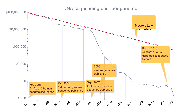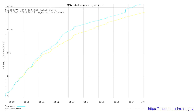This is a classic diagram in genomics. In red you have Moore's Law for computers, which basically says that the number of transistors doubles every couple of years. In blue you have the equivalent for DNA sequencing. And you can see that it's no longer linear, but rather almost quadratic — you get these massive advancements in the technology.